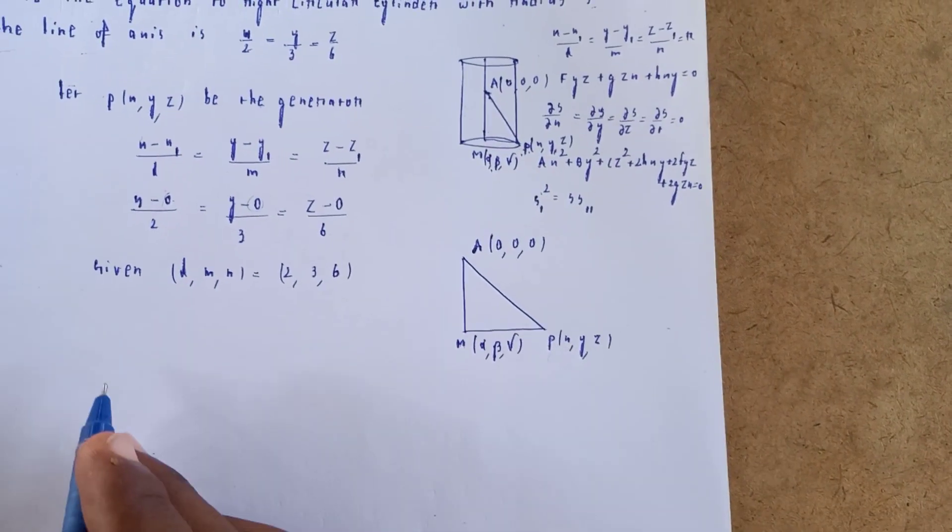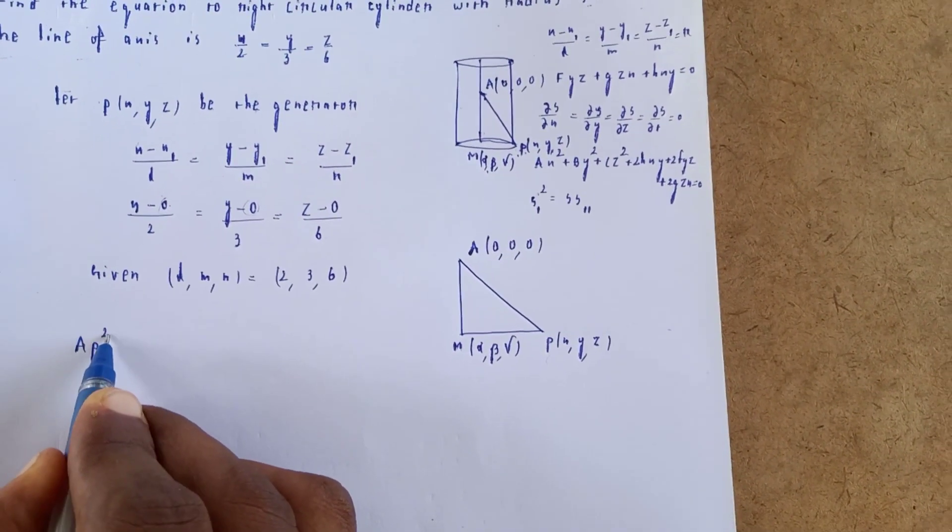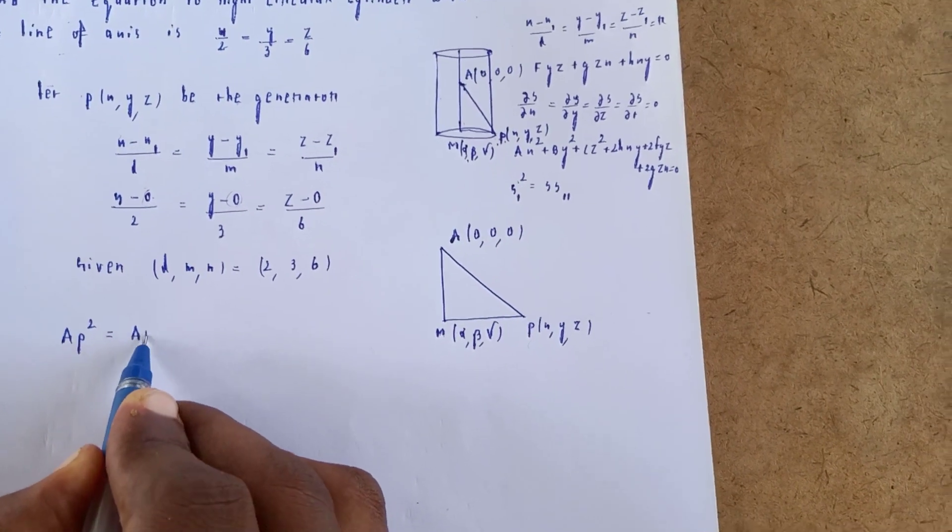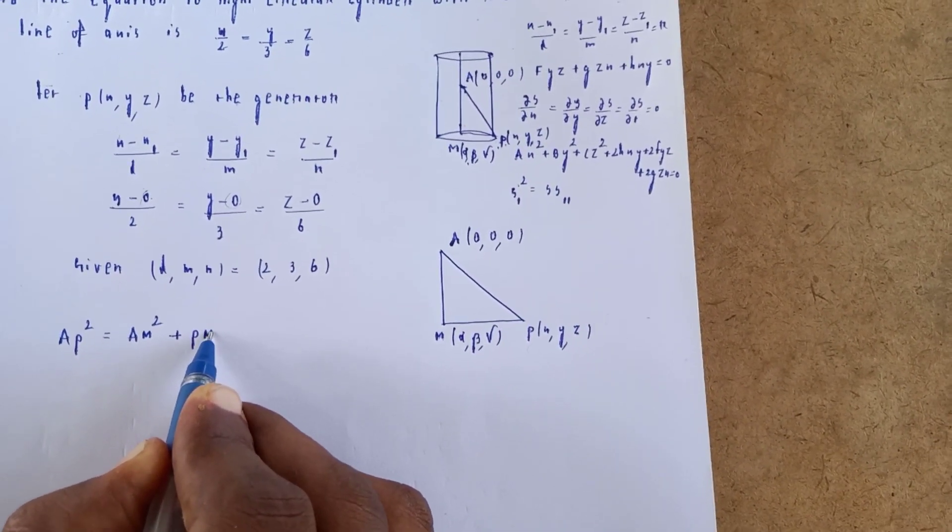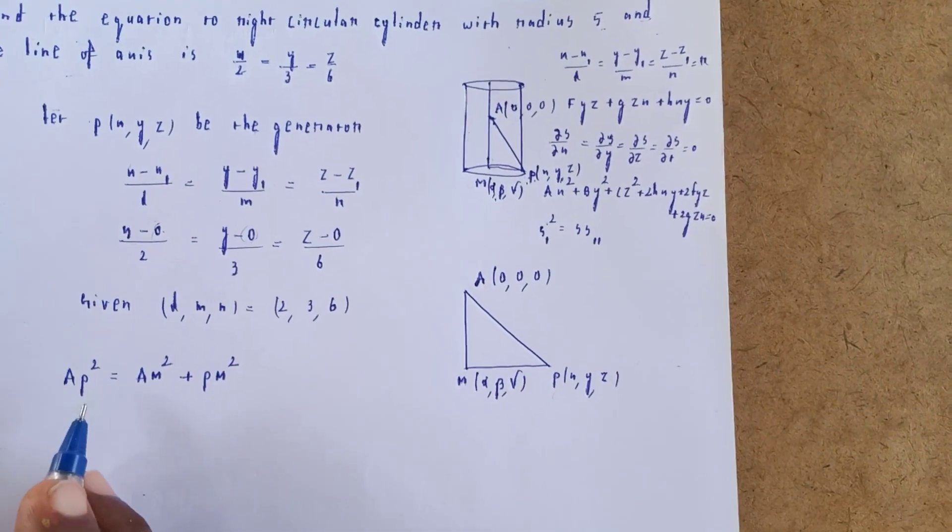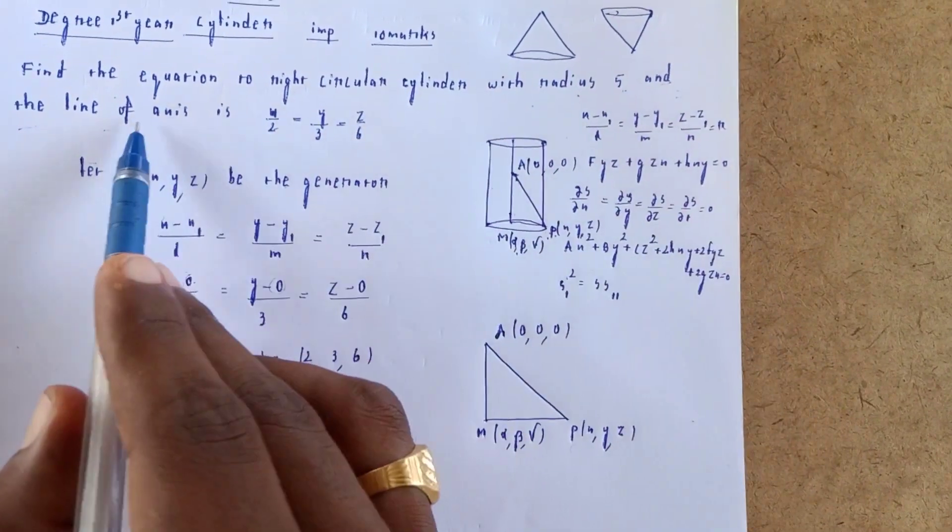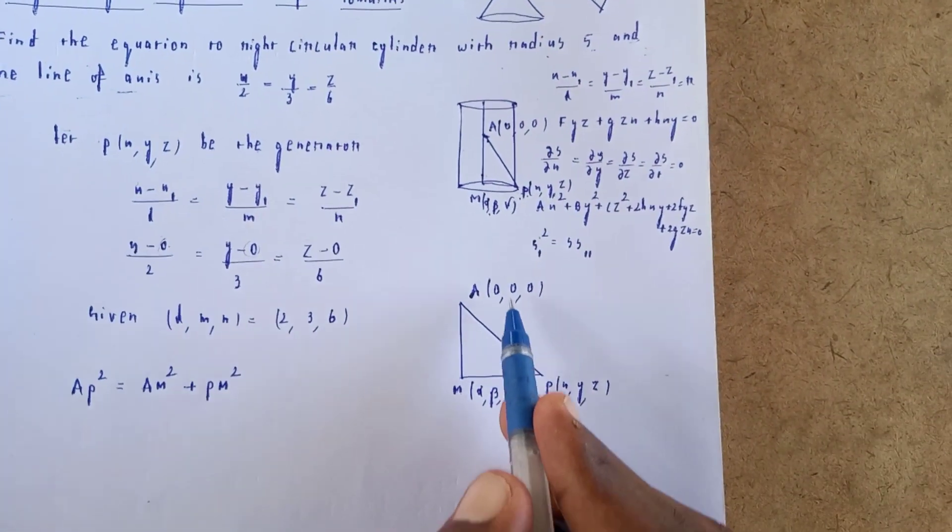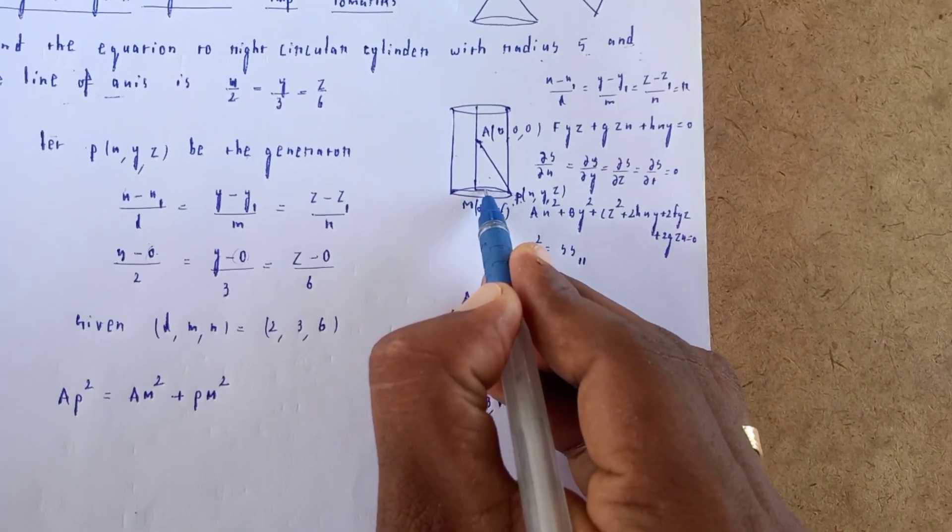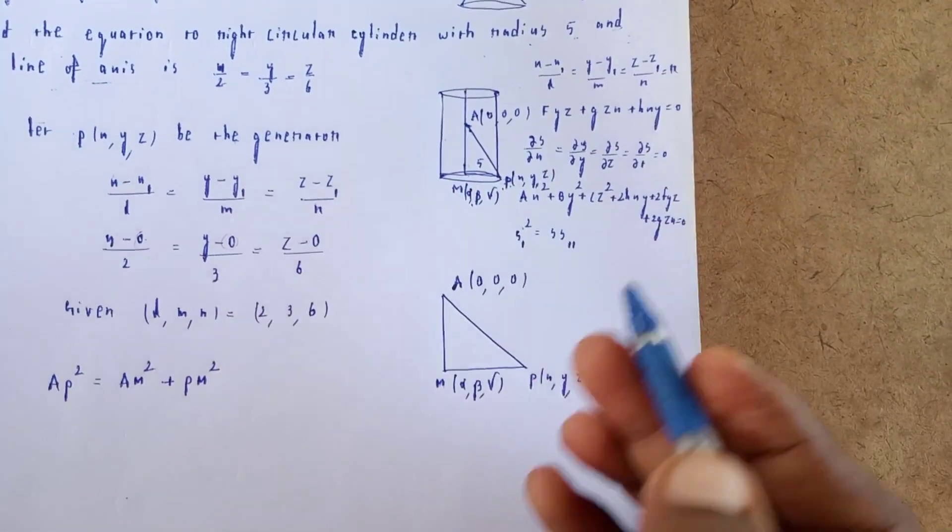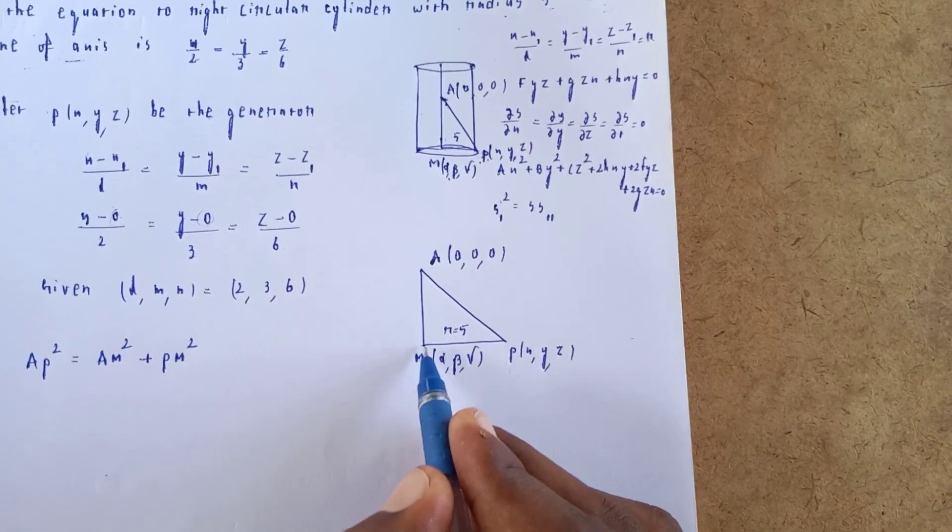By Pythagorean theorem: AP² = AM² + PM². The radius is 5, and the line of axis is the distance PM.